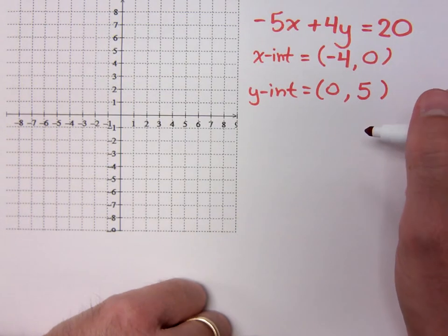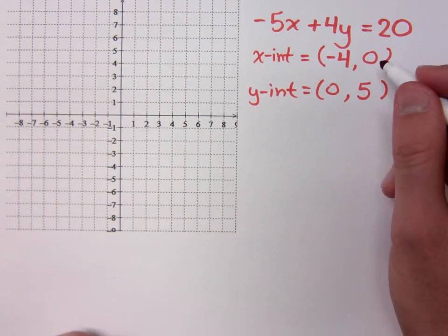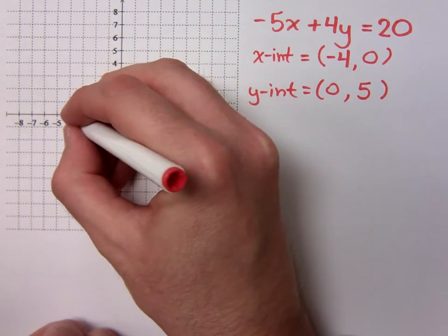Is this enough for me to get my graph? Right. X-intercepts go on the x-axis, so here's negative 4, 0.